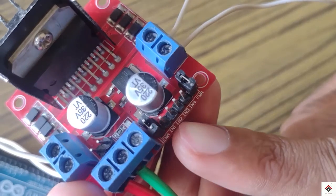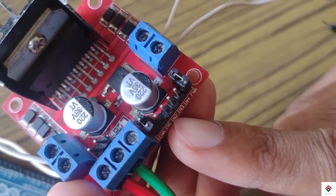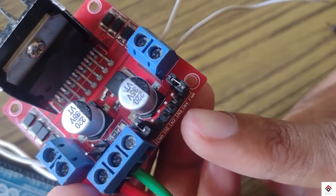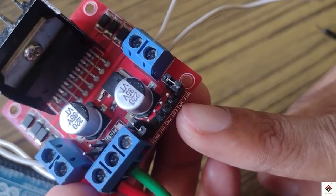This input one and two goes to Arduino digital pin four and five. Input three and four goes to Arduino digital pin six and seven.